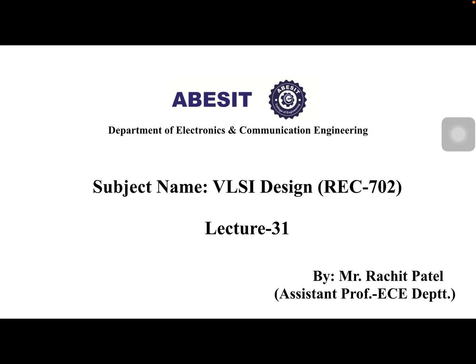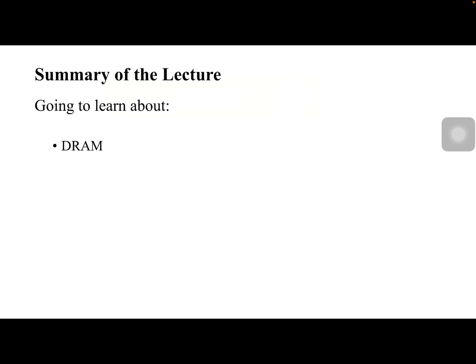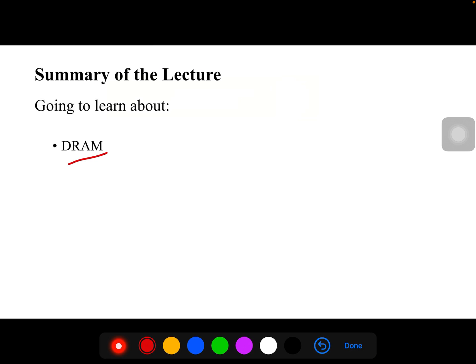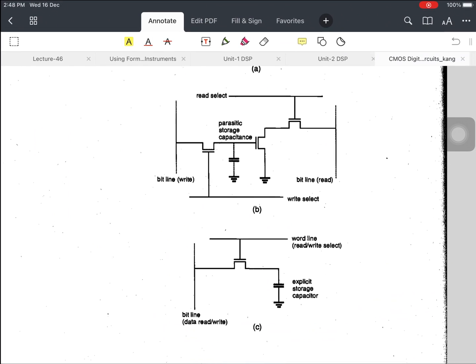Hello students. This is lecture 31 based on your fourth unit for the subject VLSI design. In this lecture, we are going to discuss DRAM — dynamic random access memory. In the previous lecture, we have seen the difference between static RAM and DRAM. Now we will talk about DRAM at the transistor level, how this DRAM is designed with transistors. Let us start with the basic structure of this RAM.